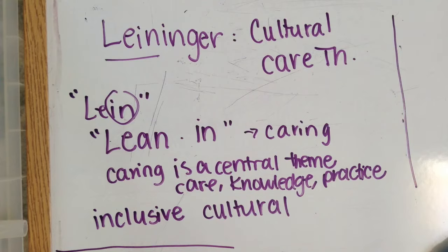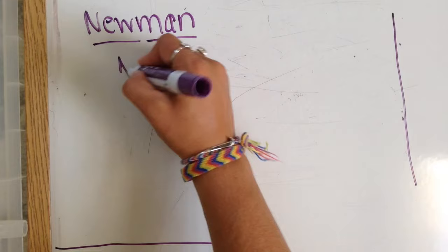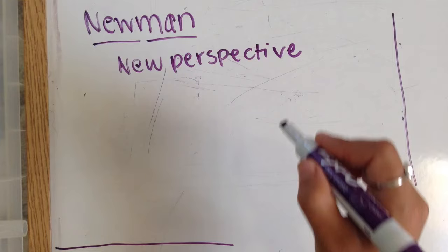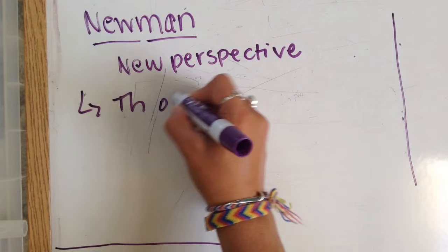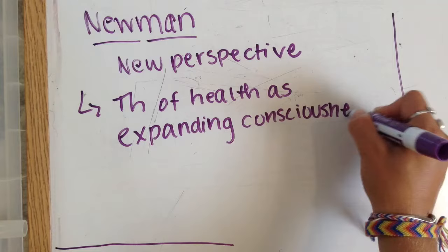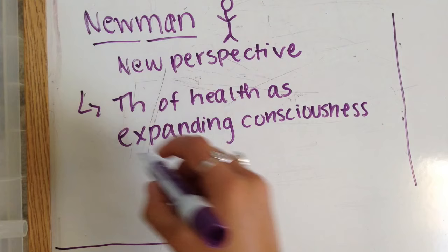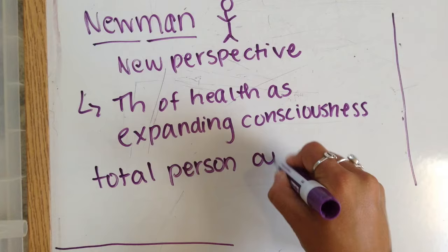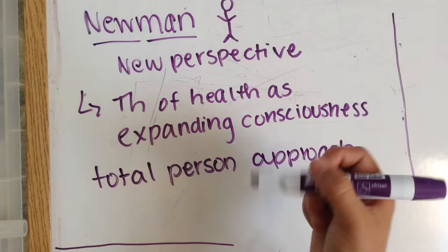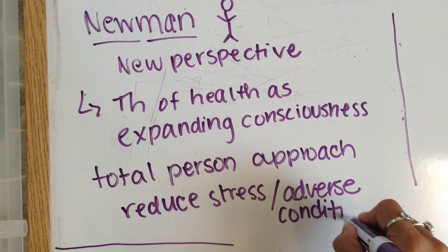Up next, we got Newman. This one's pretty simple: if you're a new man, you have a new perspective on things — you're newly awakened to a new school of thought. So, his theory is going to be the theory of health as expanding consciousness. He's expanding his consciousness because he has a new perspective, because he's a new man. With this new perspective, we have a total person approach, and Newman likes to reduce stress or other adverse conditions that may be detrimental to health.